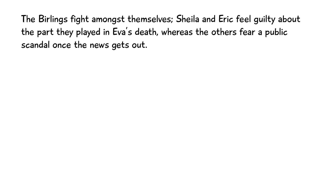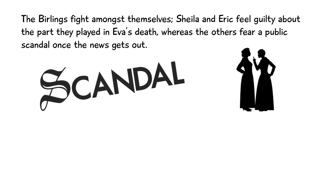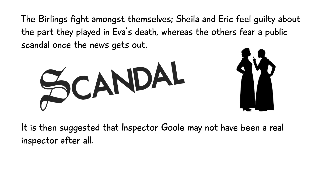Initially after the Inspector leaves, the Birlings begin to fight amongst themselves. Sheila and Eric, the younger characters, feel guilty about the part they played in Eva's death, whereas the others fear a public scandal once the news gets out. However, it's then suggested that Inspector Goole may not have been a real police inspector after all, and Mr Birling calls the police to clarify this. Interestingly, the police claim to not know an Inspector Goole.